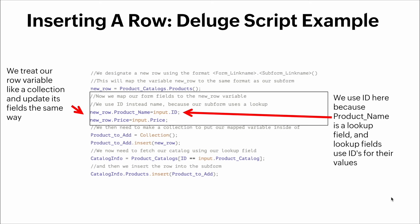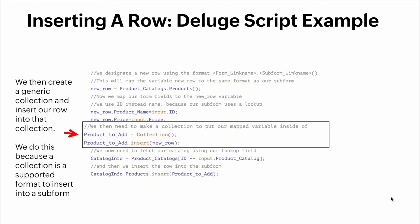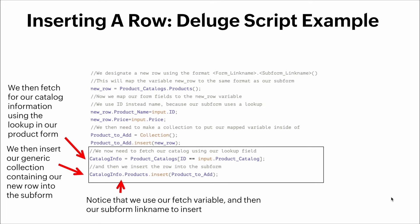We use `id` here because the product name is a lookup field and lookup fields use IDs for their values. We then create a generic collection and insert a row into that collection — we do this because a collection is a supported format to insert into a subform. We then fetch our catalog information using the lookup in our product form, and insert our generic collection containing the new row into the subform. Notice that we use our fetch variable and then our subform nickname to perform that insert.